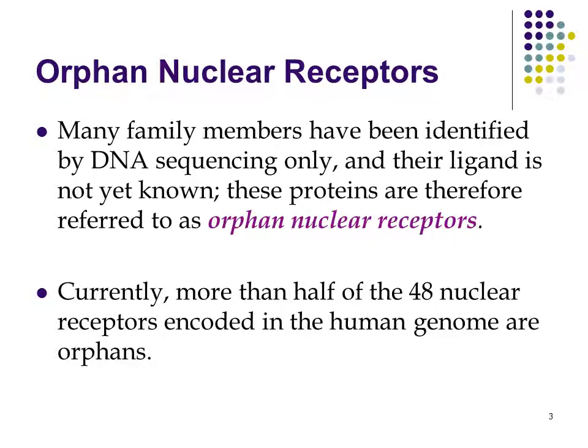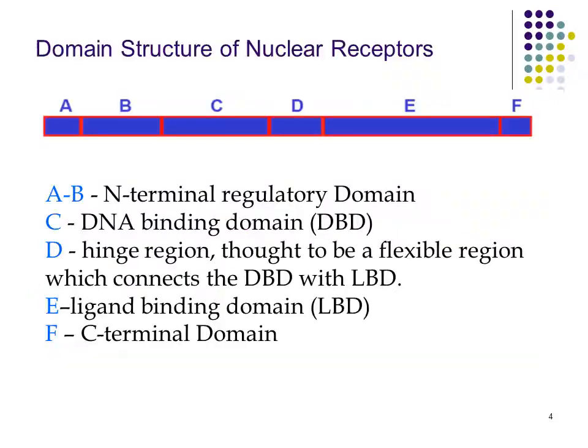Often, nuclear receptor family members have been identified by DNA sequencing, but their ligand is not yet known. These proteins are therefore referred to as orphan nuclear receptors. Currently, more than half of the 48 nuclear receptors encoded in the human genome are orphans.